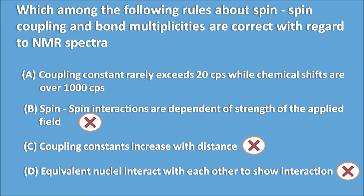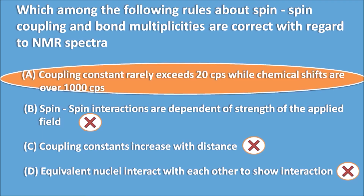So all of options B, C, and D are wrong, and option A is the right answer: coupling constants are less than 20 CPS while the chemical shifts are over 1000 CPS.